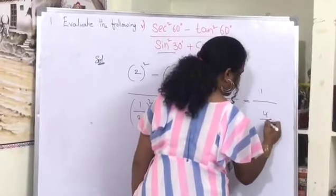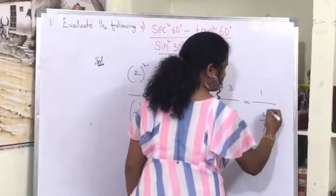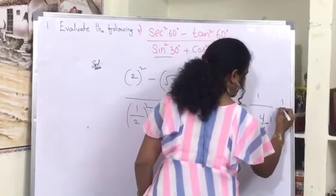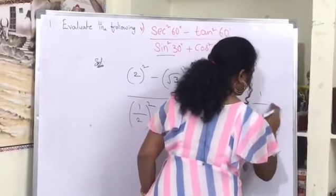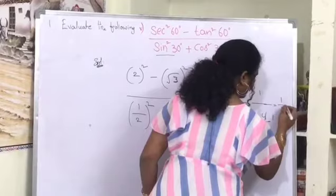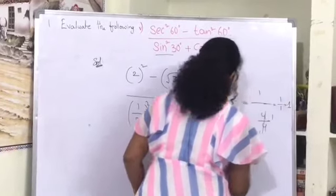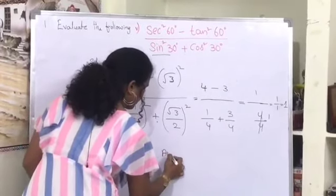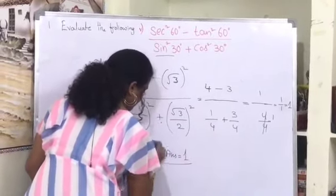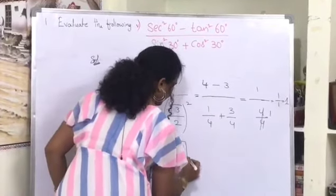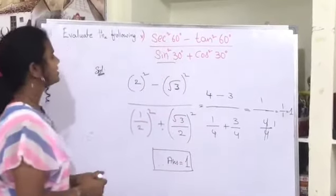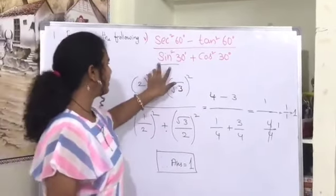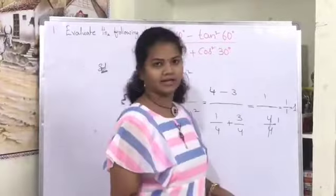We got 4 by 4 in the denominator, which simplifies to 1. So the full expression is 1 divided by 1, which equals 1. Therefore the answer for the fifth problem — secant squared 60 minus tan squared 60, divided by sin squared 30 plus cos squared 30 — equals 1.